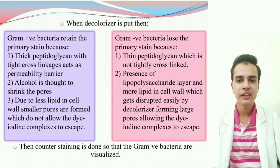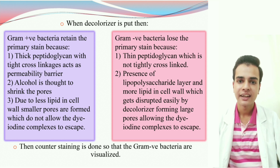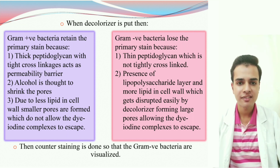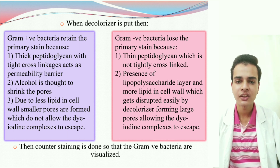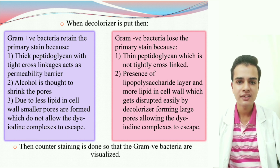Another reason is the peptidoglycan layer, which acts as a permeability barrier. In the Gram-positive bacterial cell wall, the peptidoglycan layer is very thick and is tightly cross-linked and does not allow the dye-iodine complex to escape easily. While in the Gram-negative bacterial cell wall, the peptidoglycan layer is very thin and is not tightly cross-linked, and thus it cannot act as a permeability barrier. Moreover, alcohol, when used as a decolorizer, is believed to shrink the size of pores, which could be another reason why the Gram-positive bacteria retain the primary stain. In the last step of the staining, we use a counter-stain to visualize the Gram-negative bacteria who have lost the primary stain.